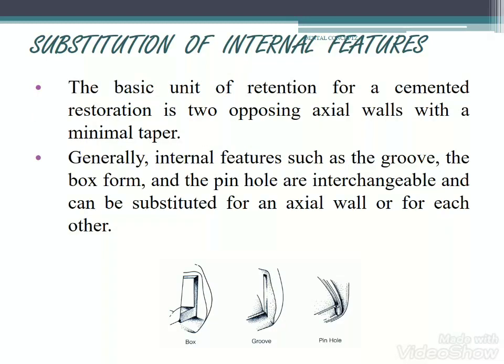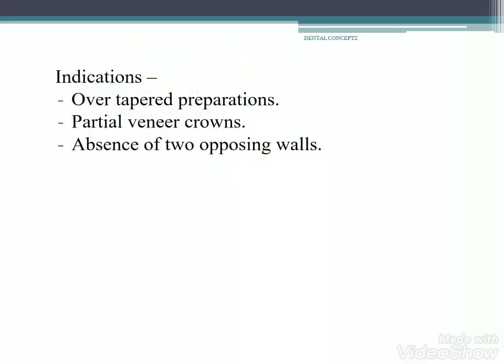Regarding substitution of internal features: the basic unit of retention for a cemented restoration is two opposing axial walls with minimal taper. Generally, internal features such as grooves, box form, and pinholes are interchangeable and can be substituted for an axial wall or for each other. These are indicated in cases of over-tapered preparations, partial coverage crowns, and when two opposing walls are absent.